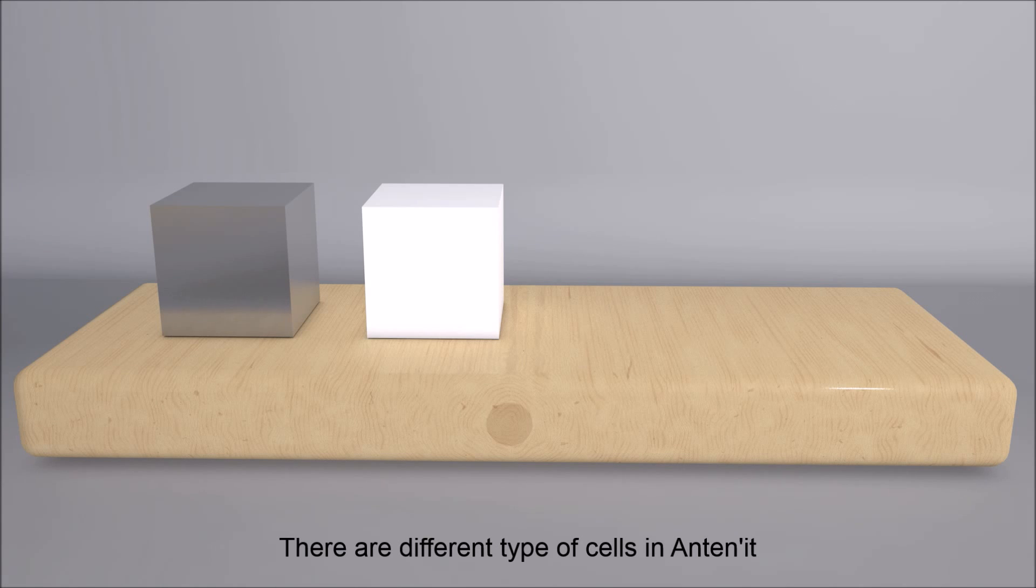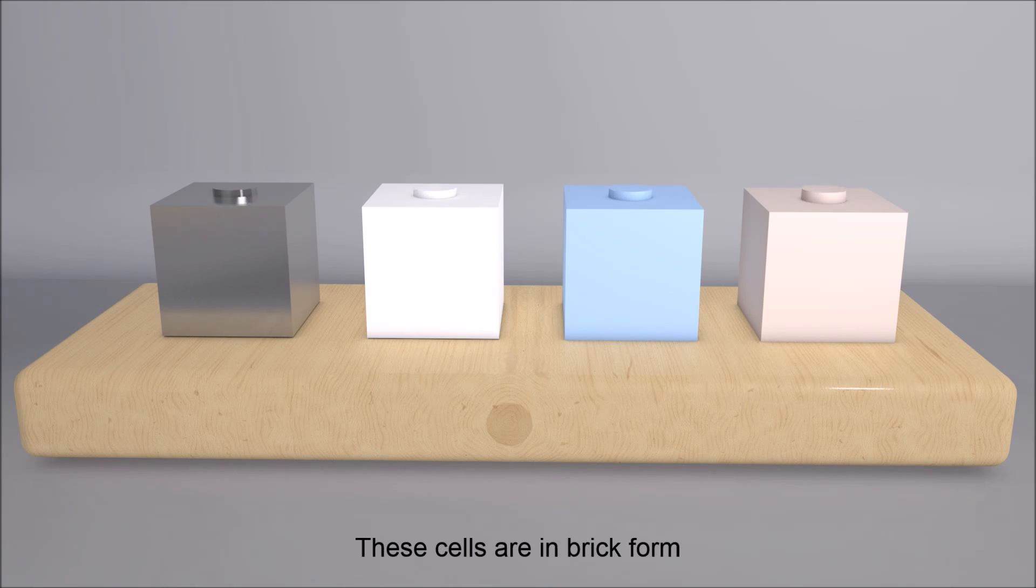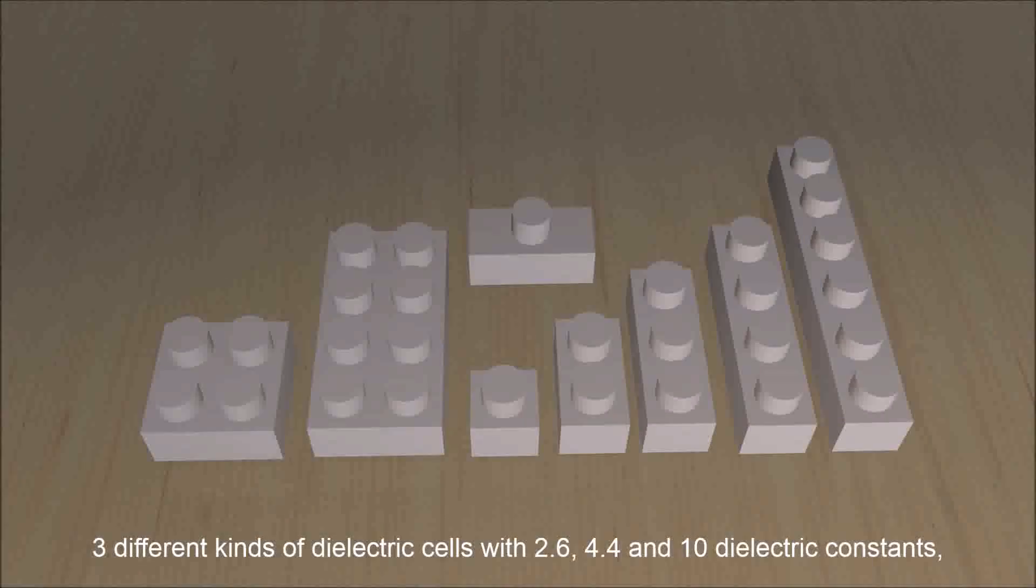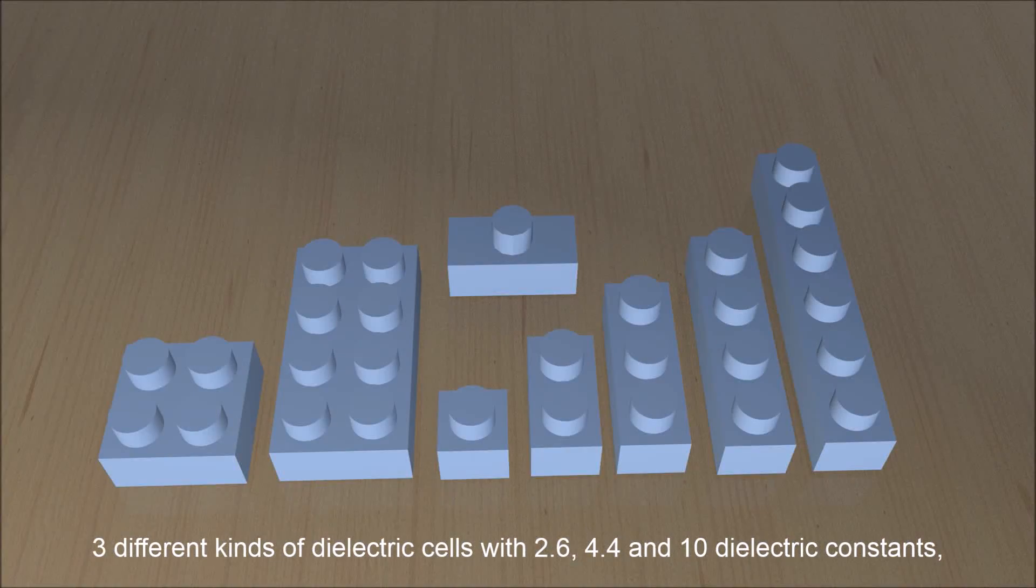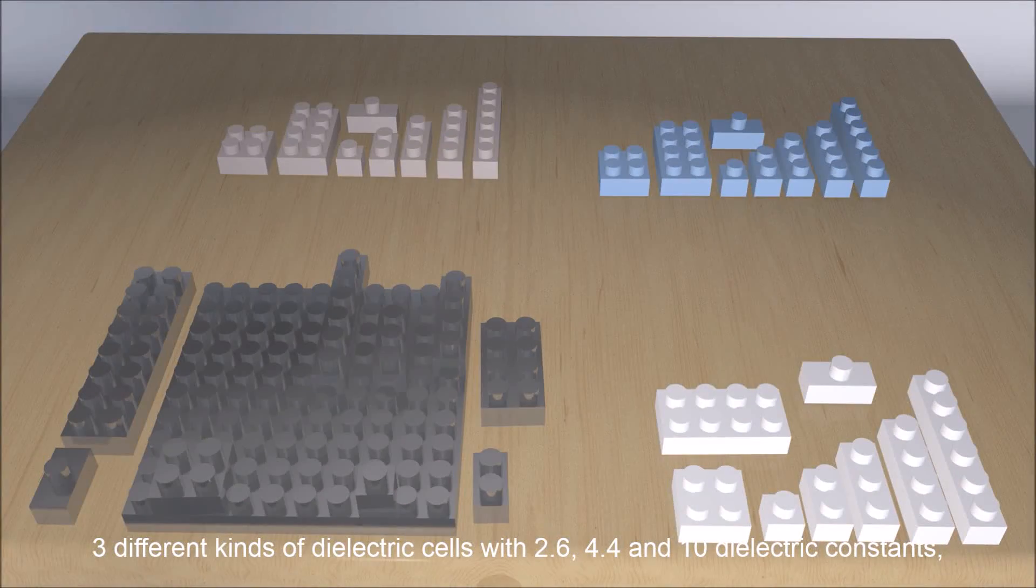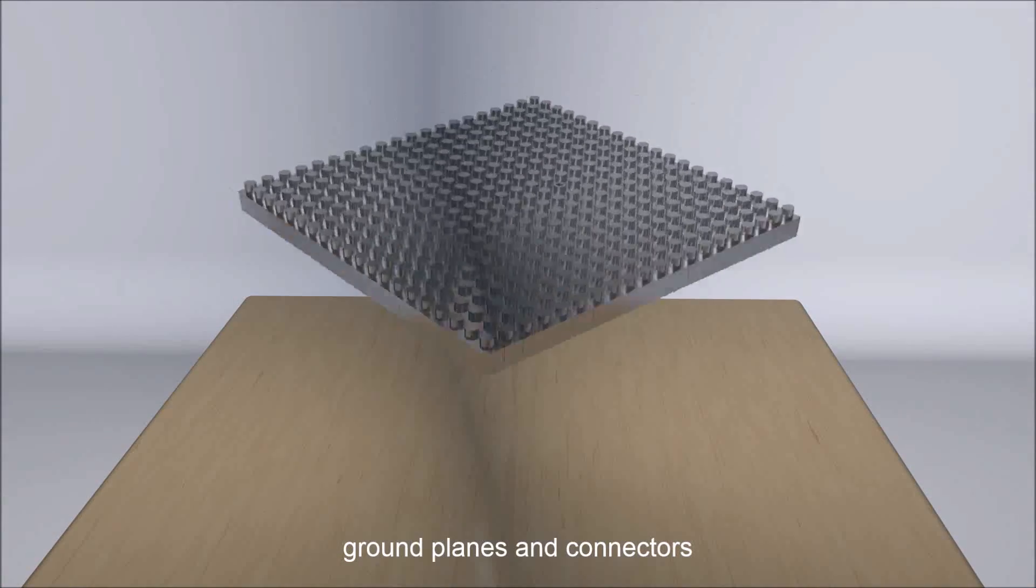There are different types of cells in Antennate. These cells are in brick form. Antennate includes metal cells, three different kinds of dielectric cells with 2.6, 4.4, and 10 dielectric constants, ground planes, and connectors.